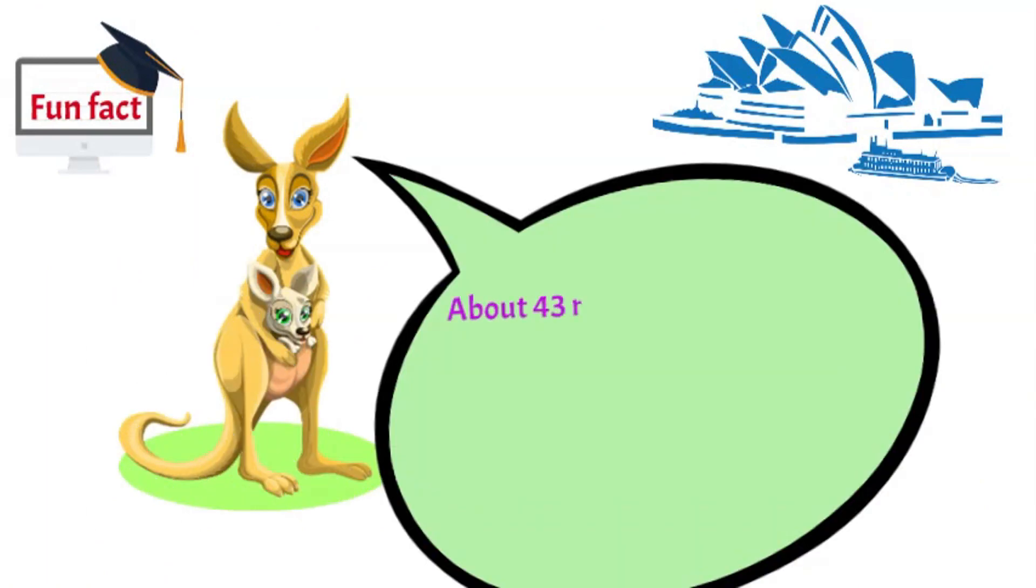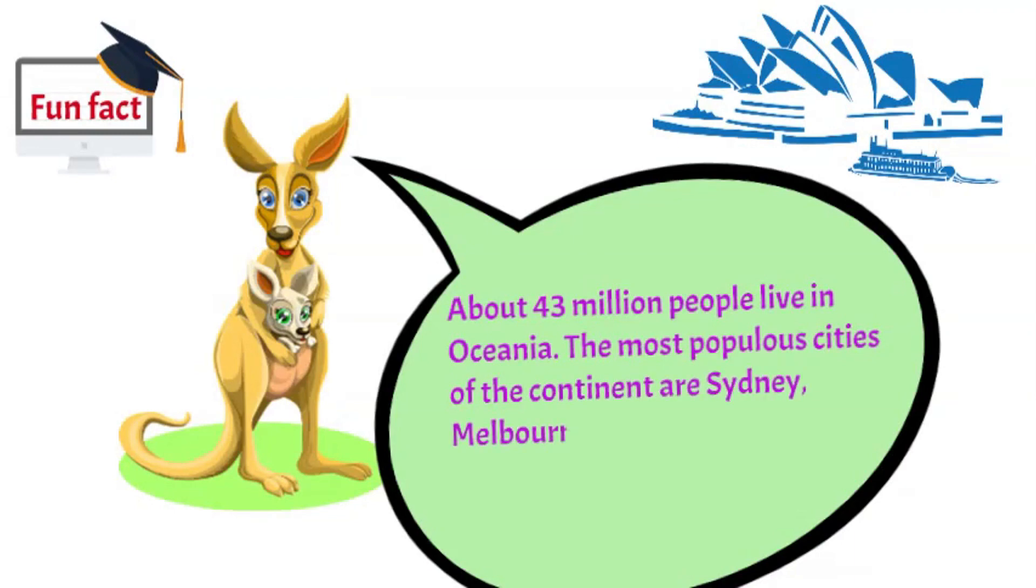Did you know, about 43 million people live in Oceania. The most popular cities of the continent are Sydney, Melbourne, Brisbane and Perth. All these cities are in Australia.